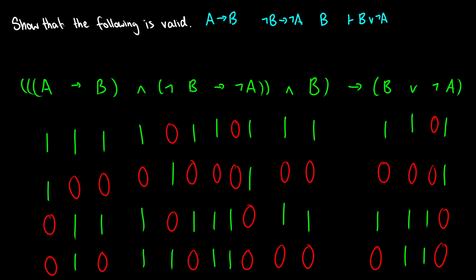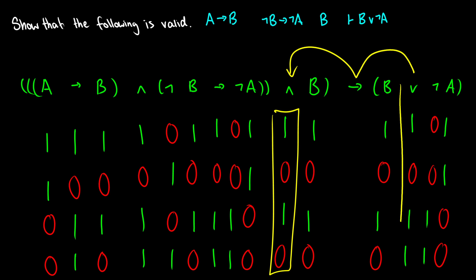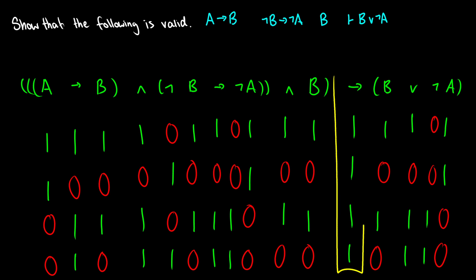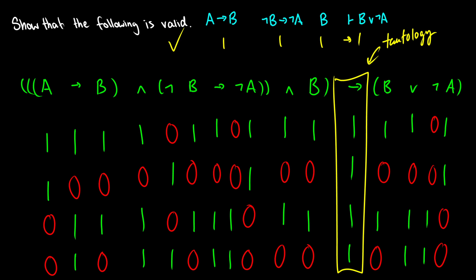The final step: take information from the AND column representing the entire antecedent, and the OR column representing the entire consequent. We're checking we never have one arrow zero. Row one: one arrow one, true. Row two: zero arrow zero, true. Row three: one arrow one, true. Row four: zero arrow one, true. The entire column is a tautology, therefore the argument is valid. There is no way to get one arrow zero, so this is valid.